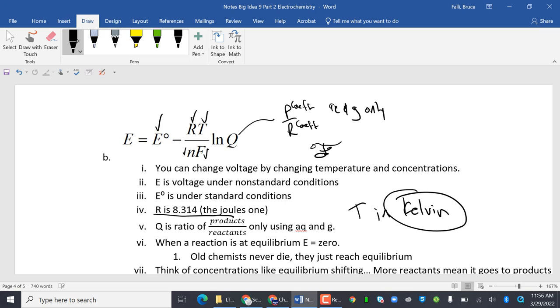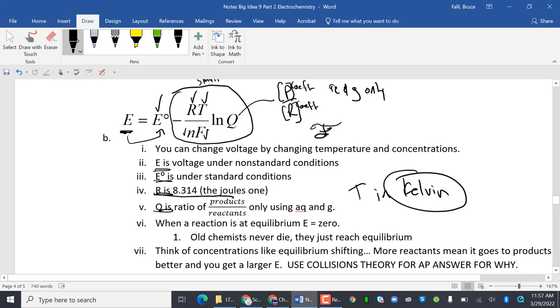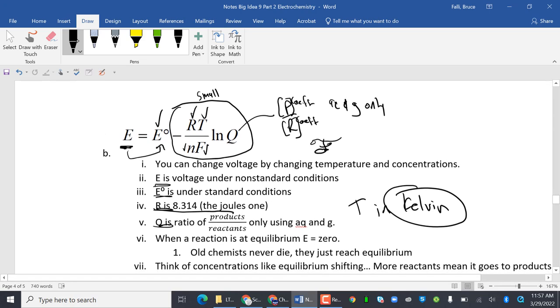So this is all stuff, just kind of all jammed in there. So notice my voltage, you can change voltage by changing the temperature and concentration. E is the voltage under non-standard conditions. And then on this, notice how the voltage should be very close to this, but I'm going to subtract this. I want to point out that this number will be small. So you're going to subtract something small from it, so it'll be close. Now it could be a small positive, it could be a small negative. But that's it.